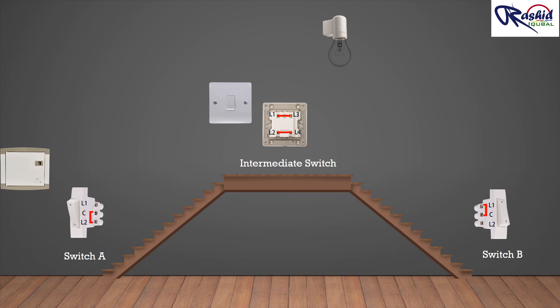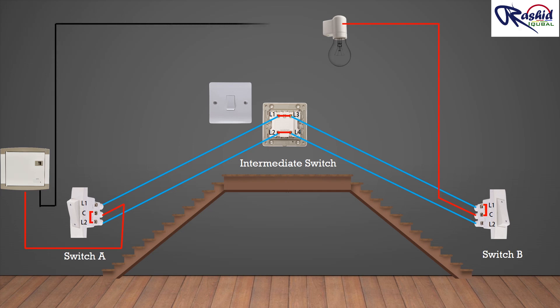L1 of switch A connects to L1 of the intermediate switch. Then L2 of switch A connects with L2 of the intermediate switch. L3 of the intermediate switch connects with L1 of switch B, and L4 of the intermediate switch connects with L2 of switch B. We take our live wire and feed it into the common of switch A, then run a wire from the common of switch B up to the light fixture. The neutral runs direct from the main power supply panel to the lighting fixture.